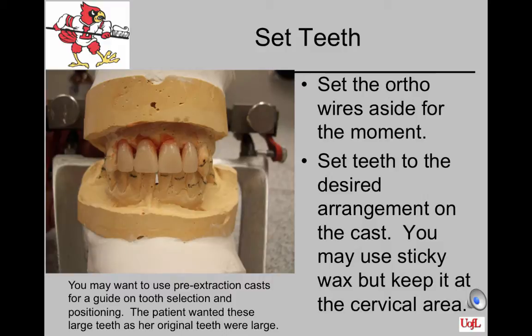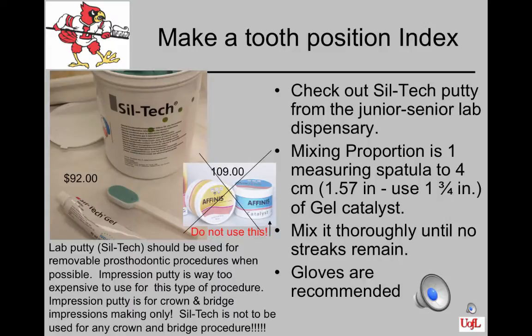Set the ortho wires aside and begin setting the selected teeth to the desired arrangement on the cast. You may need to cut on the ridge lap area of the tooth to get the desired angulation for maxillary anteriors. Use a slight amount of sticky wax limited to the cervical area — avoid getting it up onto the tooth as it's hard to clean off. Obtain the laboratory putty from the junior-senior lab dispensary rather than impression putty, which is extremely expensive for this procedure.